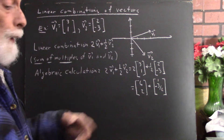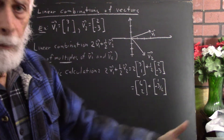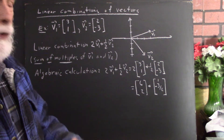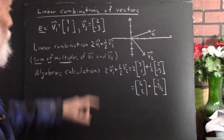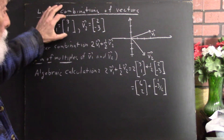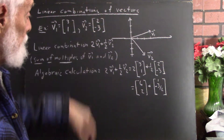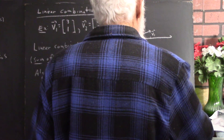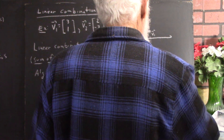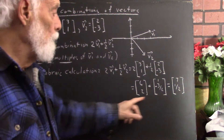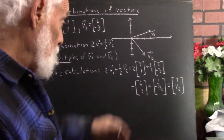We could convert to decimal or mixed number notation if we want to graph something, but when we do calculations we don't want to be dealing with mixed numbers, and when we want to be exact we don't use decimal approximations either. So, 2v1 plus one-half v2: 2 times (3,1) is (6,2), and half of (2,-3) is (1, -3/2). Adding those gives us (7, 1/2), because 2 and -3/2 is 4/2 minus 3/2, which is 1/2.